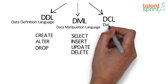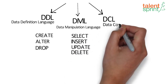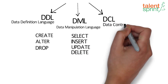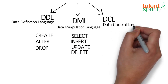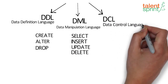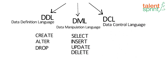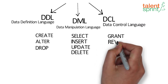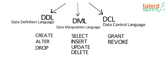DCL is Data Control Language. It has two commands: GRANT and REVOKE. GRANT gives privileges to a user to work on the data, and REVOKE takes back those privileges from the user.